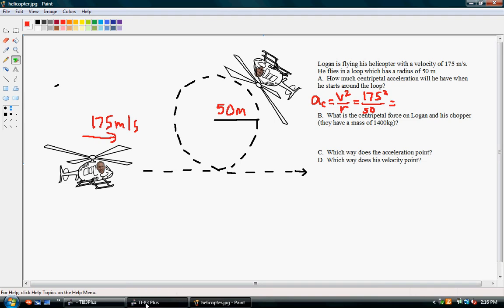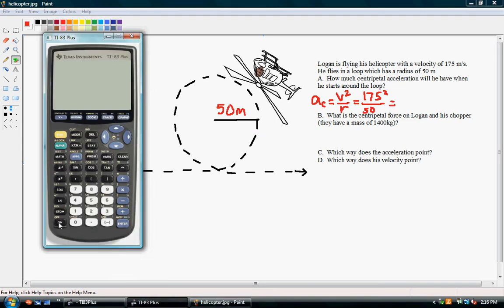So, when we grab our calculator, and do 175 squared, we get a really large number, 30,625.